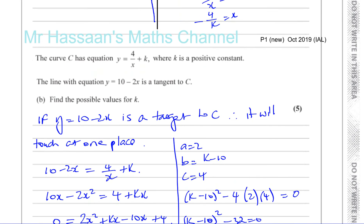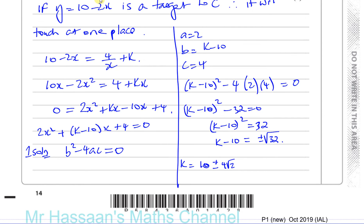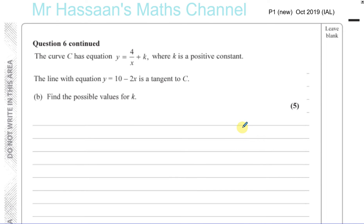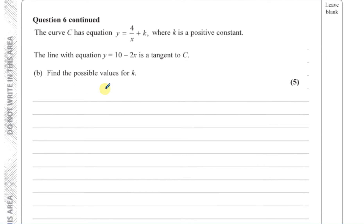Those are the two solutions for k. There's also another method you could use for this question, although I think the first method is probably better. I'll just show you this alternative method for your information. When a line is a tangent to a curve, the curve and the line have the same gradient at that point.